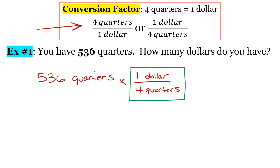If you remember in math, when you cross multiply you're able to cancel things out that are the same. So our units are going to cancel out — our quarters are going to cancel out. 536 divided by four gets us 134, and the only units remaining are dollars, so the answer is 134 dollars.